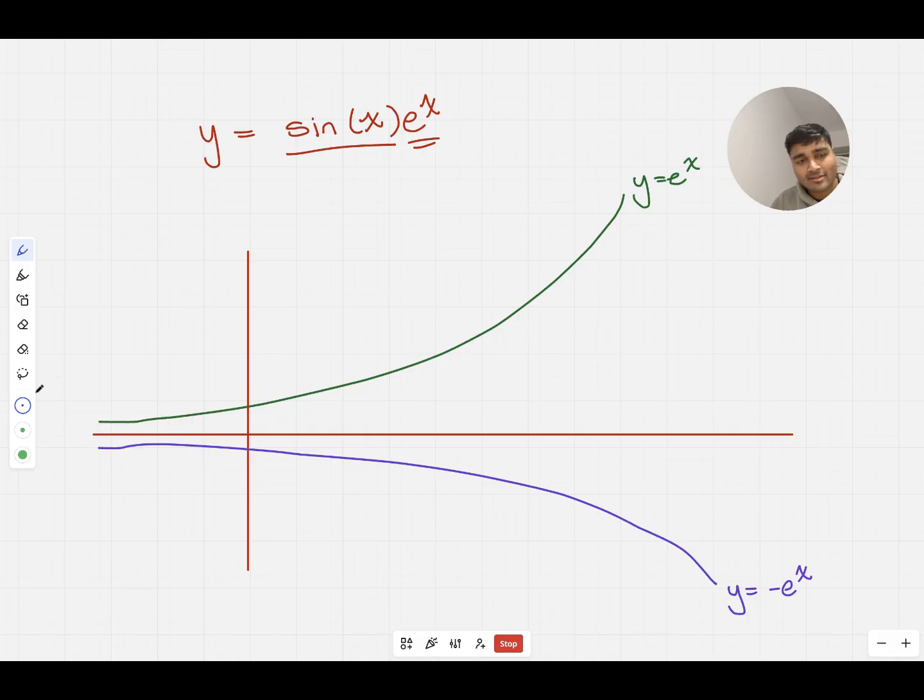And essentially, we know that our graph of y equals sine of x e to the x, in fact I'm going to draw this in black, we know that when x is 0, y is going to be 0 because of the sine of x. It's 0 times something. So we know our graph is going to start at the origin.